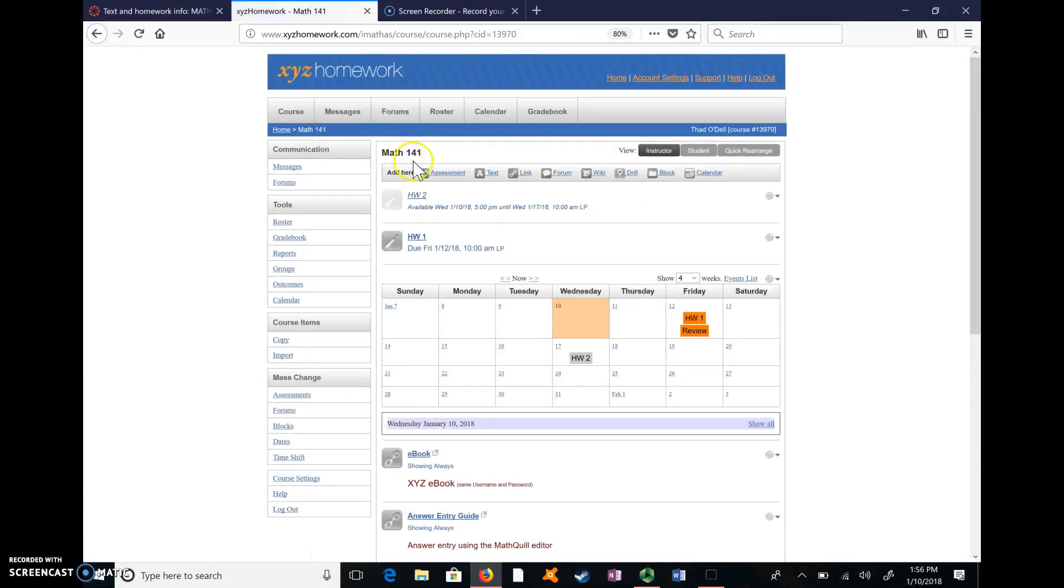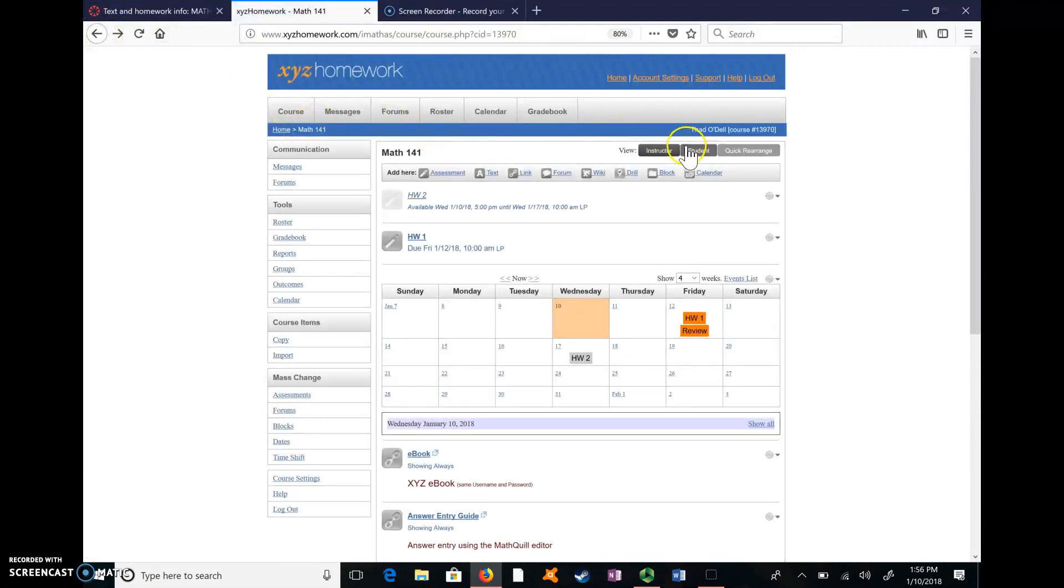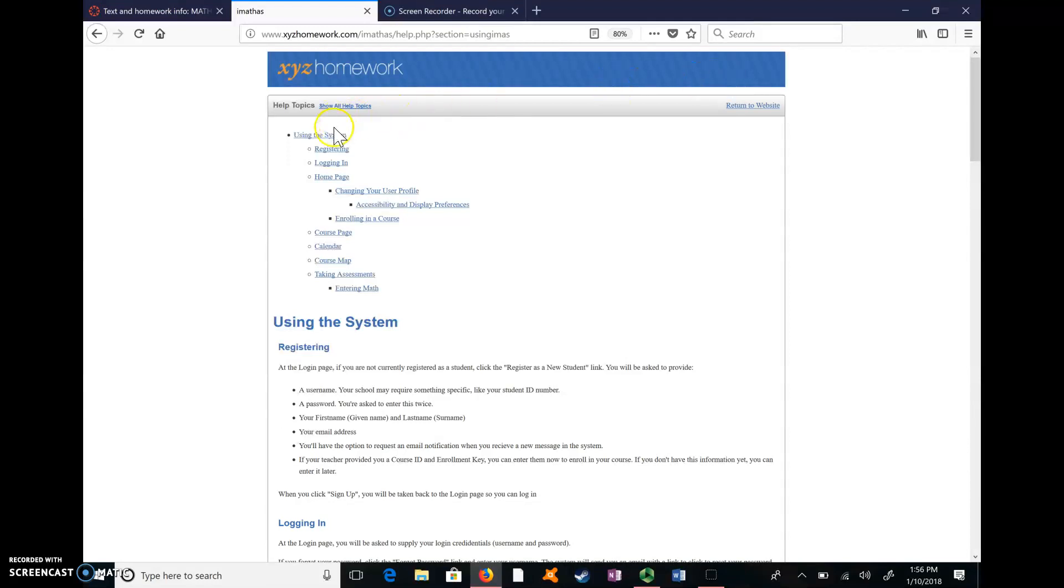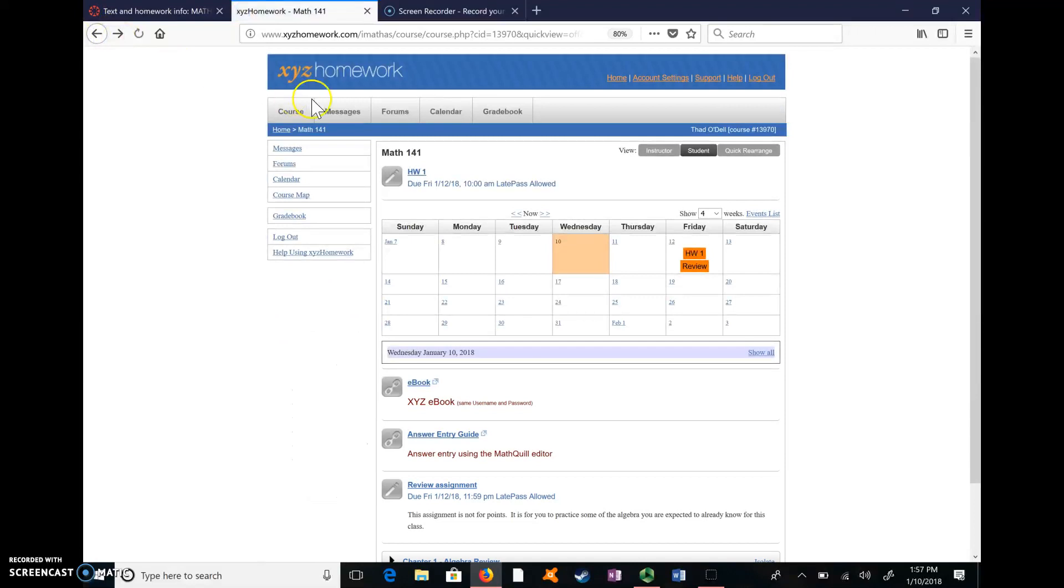Let me go back real quick to the opening here. If you click on help and wait patiently, it gives you all kinds of little information pages where you can go and look at different things. On the student version, it's a smaller page. It still has some things like using the system, changing your user profile, enrolling in a course, calendar course map, taking assessments, entering math. That's kind of what we're just talking about. It has a bunch of information about that. So you can get that by clicking on help up here.